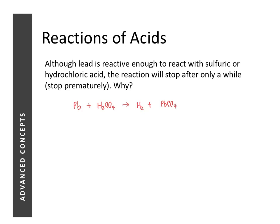The key thing about this is that lead(II) sulfate is insoluble in water. So when the product of a metal with an acid produces a salt that is insoluble in water, what happens is this: as lead reacts with the acid, it forms an insoluble layer of lead(II) sulfate. Once that insoluble layer forms, it acts as a barrier to prevent sulfuric acid from reaching the lead, so the reaction stops prematurely.